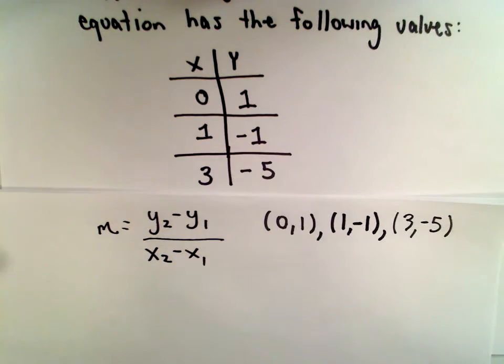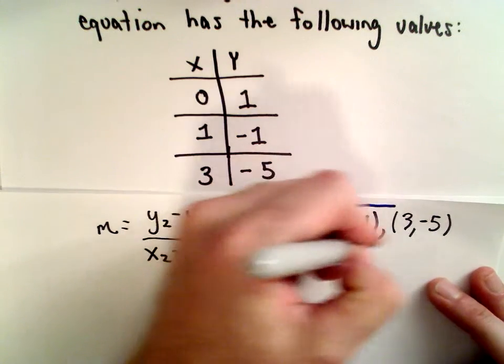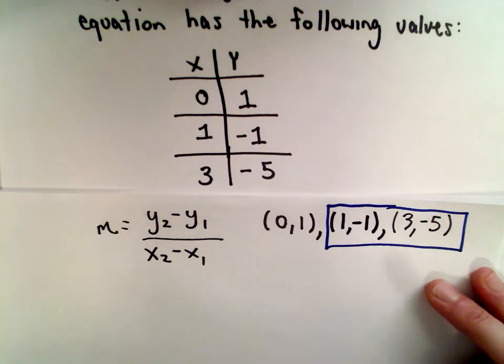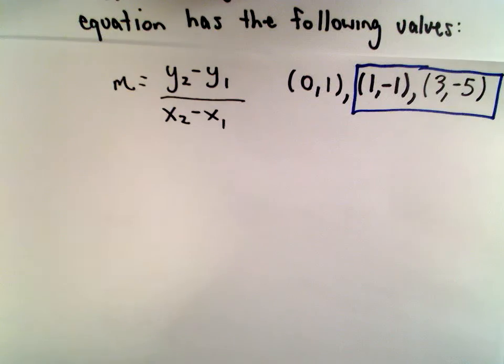We can use any two of these that we wish. I don't know, it doesn't really matter. I'll use the (1, negative 1) and the (3, negative 5) for no particular reason. Just picking two at random.